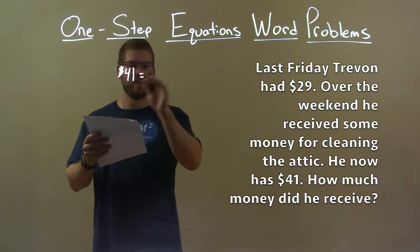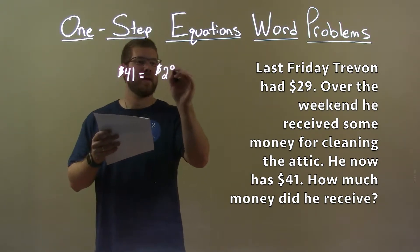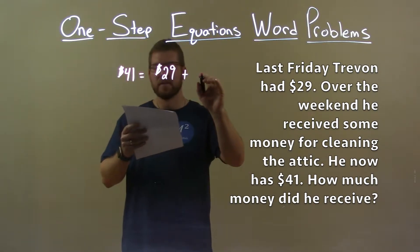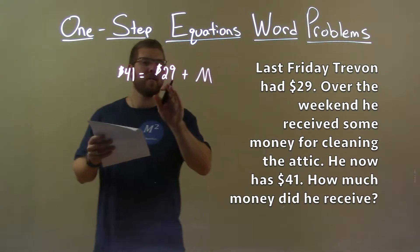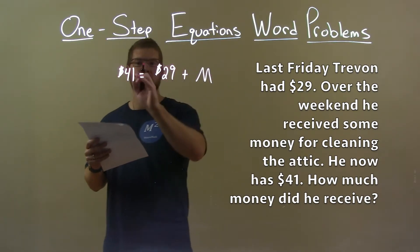That total of $41 is going to be equal to his initial $29 plus the amount of money he received over the weekend. So the initial amount, $29, plus the money over the weekend is equal to a total of $41.